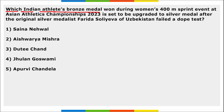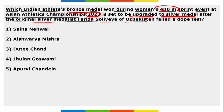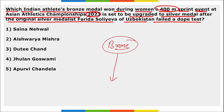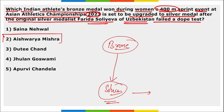Next: which Indian athlete's bronze medal won during the women's 400-meter sprint event at the Asian Athletics Championship 2023 is said to be upgraded to a silver medal? The original silver medalist, Farida Solieva of Uzbekistan, failed a dope test. Indian athlete Aishwarya Mishra, who earlier won bronze medal, has now been upgraded to silver medal.